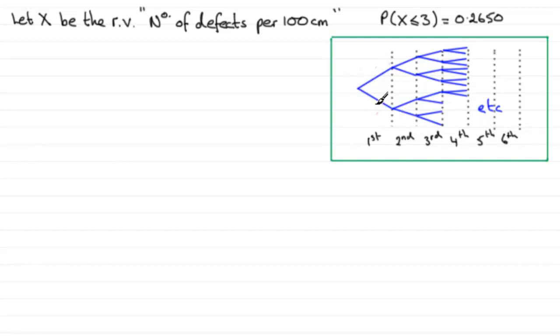And when I look at the first plank, or any of these planks for that matter, what can happen? Well, you can either get less than or equal to 3 defects, or you can get more than 3 defects.